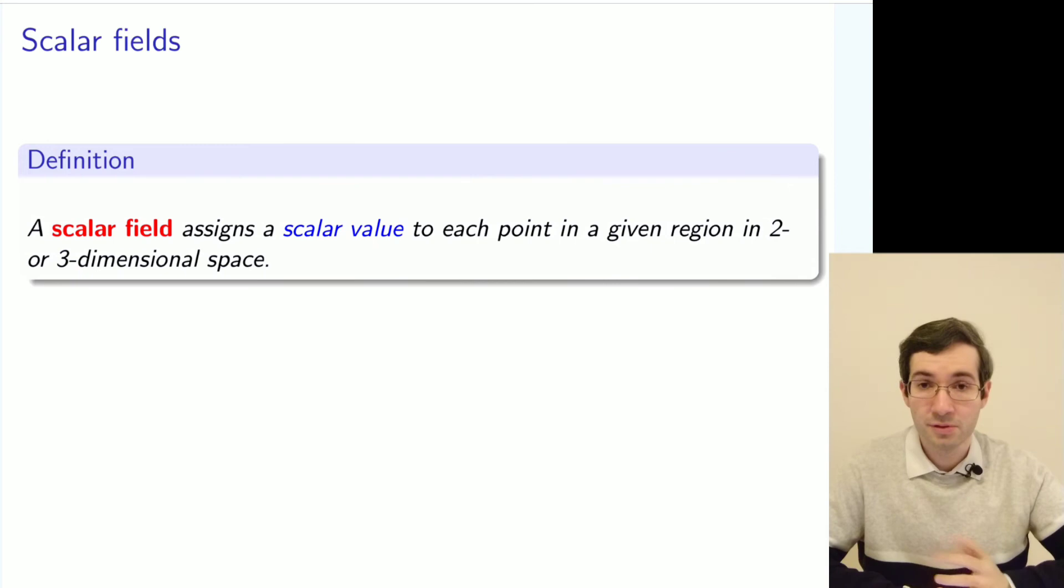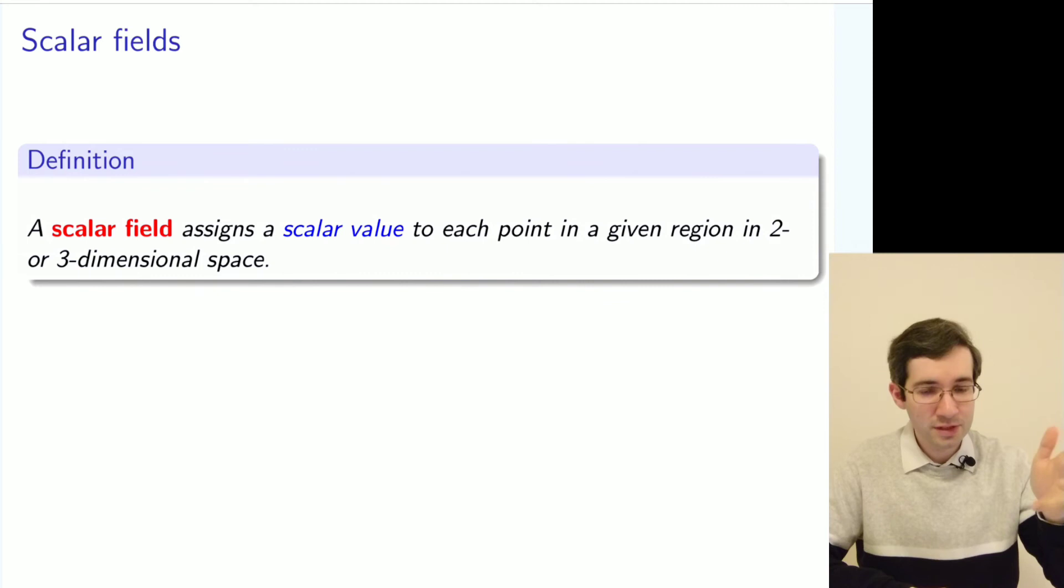But a scalar field is a set of values at given points. Each point—a coordinate in 3D or 2D—has an associated value to it, and the whole collection of these points will be the scalar field.